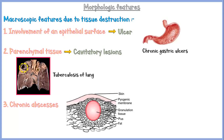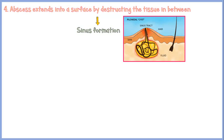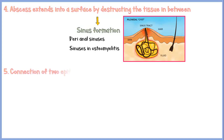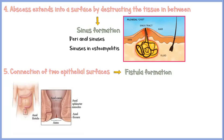In contrast to acute inflammatory abscesses, in chronic inflammation there will be a fibrosis capsule surrounding the pus-filled cyst. When an abscess extends into a surface through destruction of the tissues in between, a sinus is formed. The major function of these sinuses is to discharge out the contents within the abscess. Examples include perianal sinuses and sinuses in osteomyelitis. If the chronic inflammation-related tissue destruction connects two epithelial surfaces, a fistula is formed. For example, in Crohn's disease, fistulae are formed connecting the mucosa of the anal canal with perianal skin.